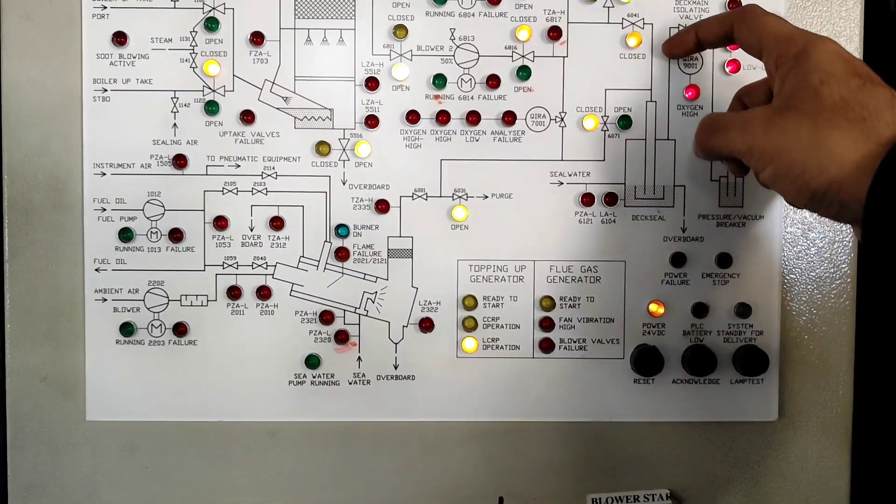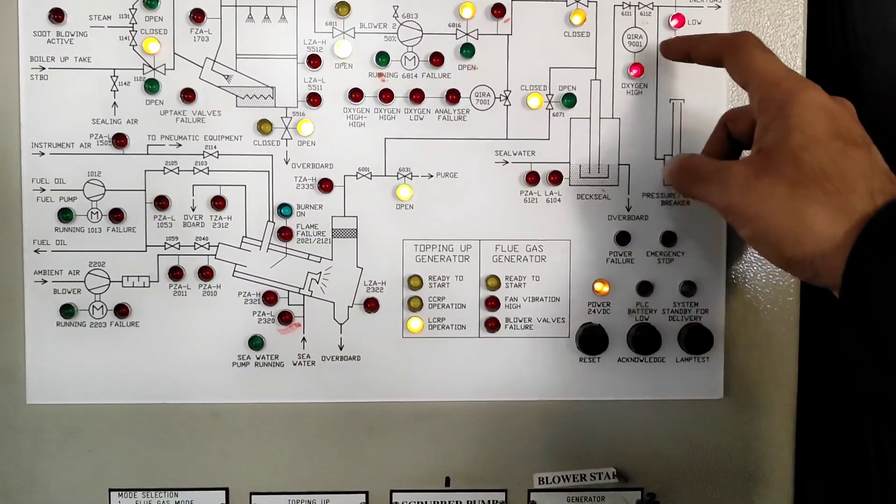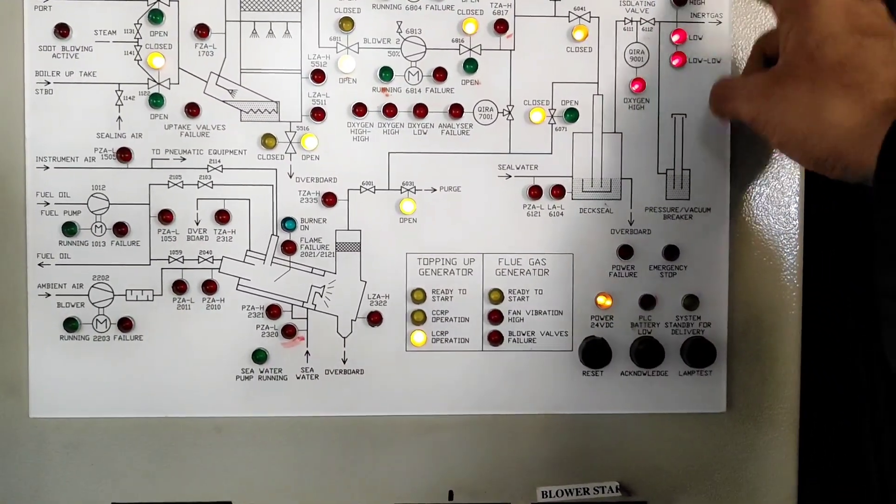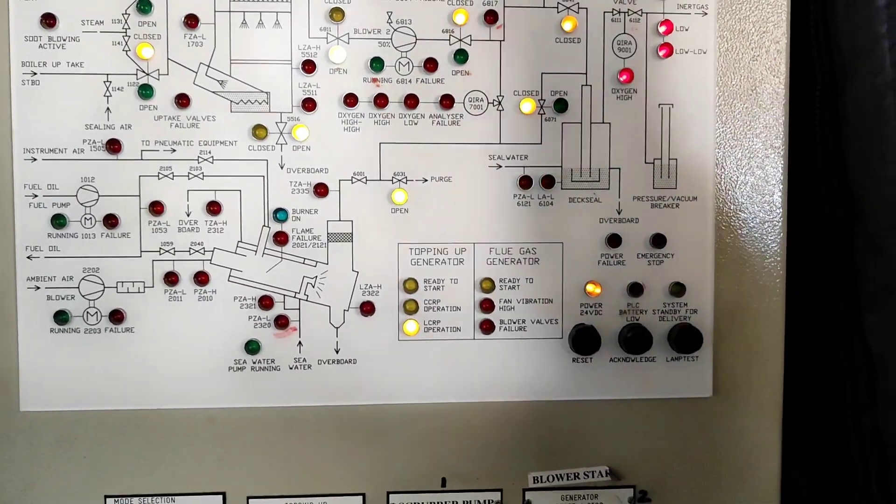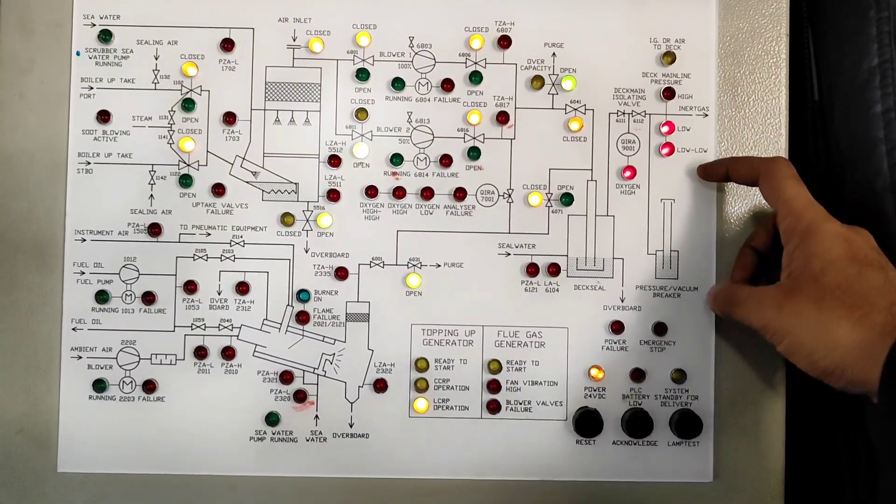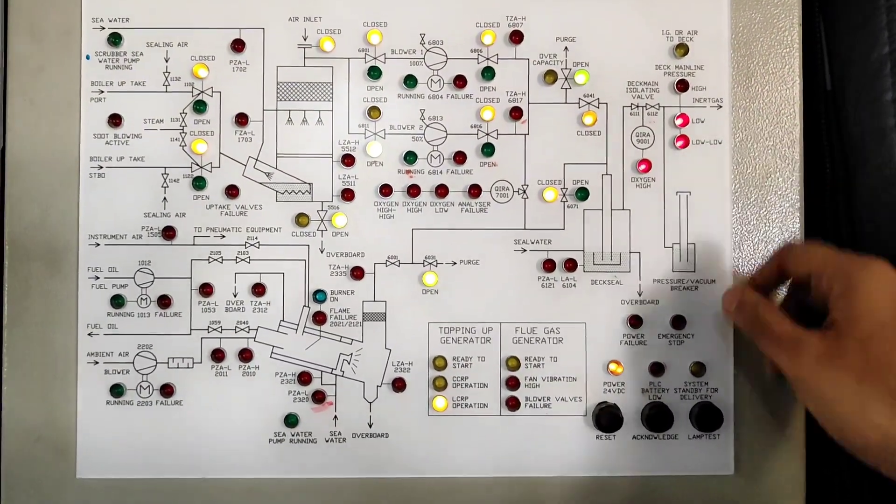So this will open, it will go to deck seal. From here there is a water seal. From here it will come and it is like a deck isolation wall, manual wall. Here oxygen content will also be monitored and then it will go to deck main line where individual tanks will be topped up. So if there is high or low IG pressure these indications will be there.